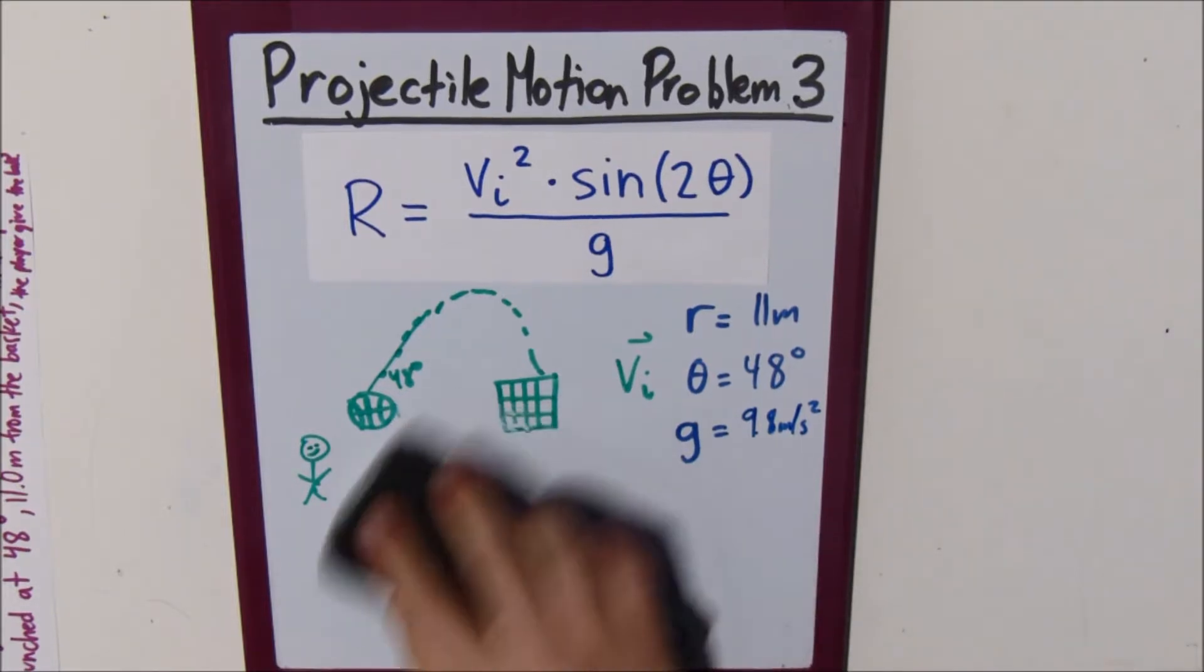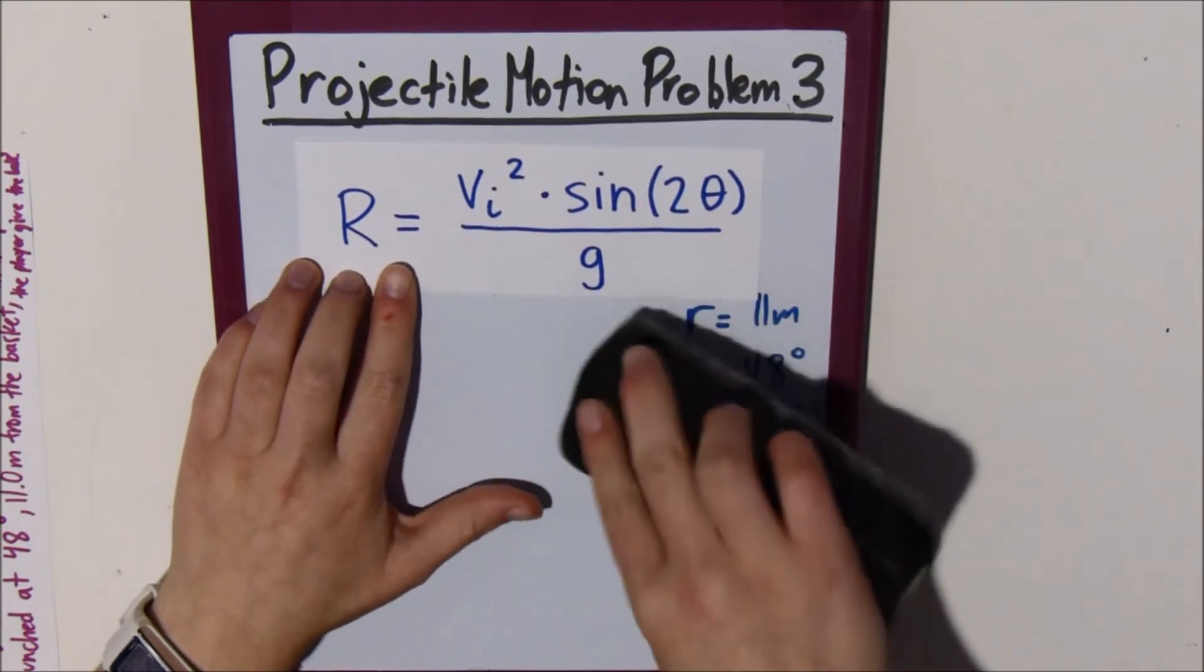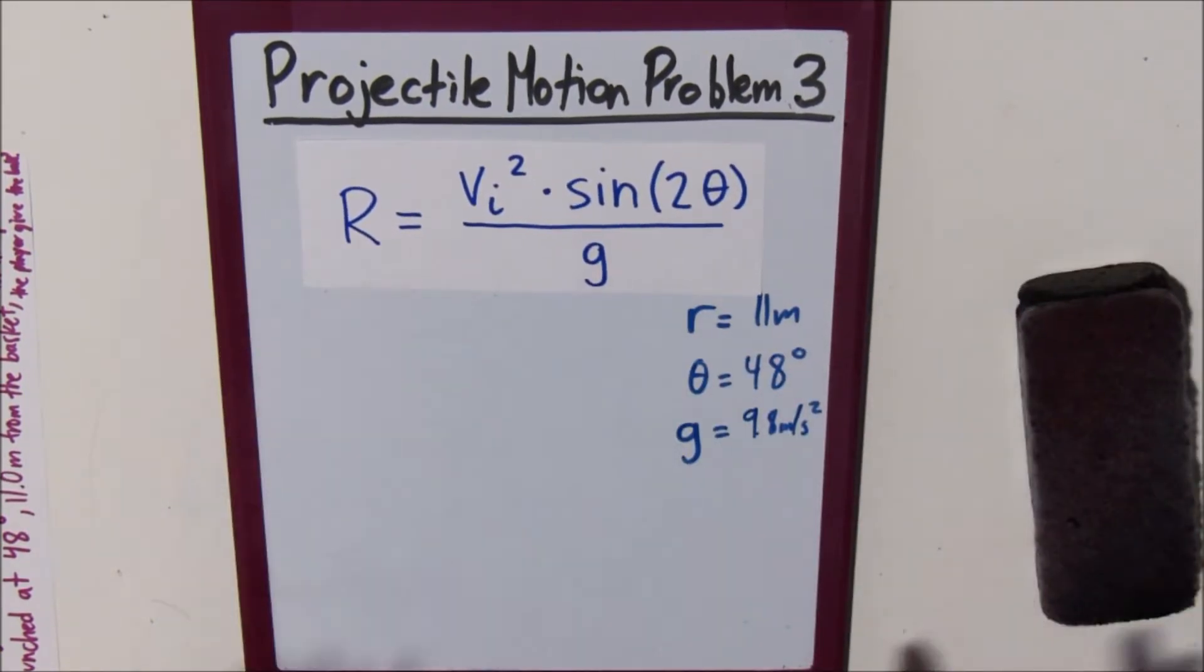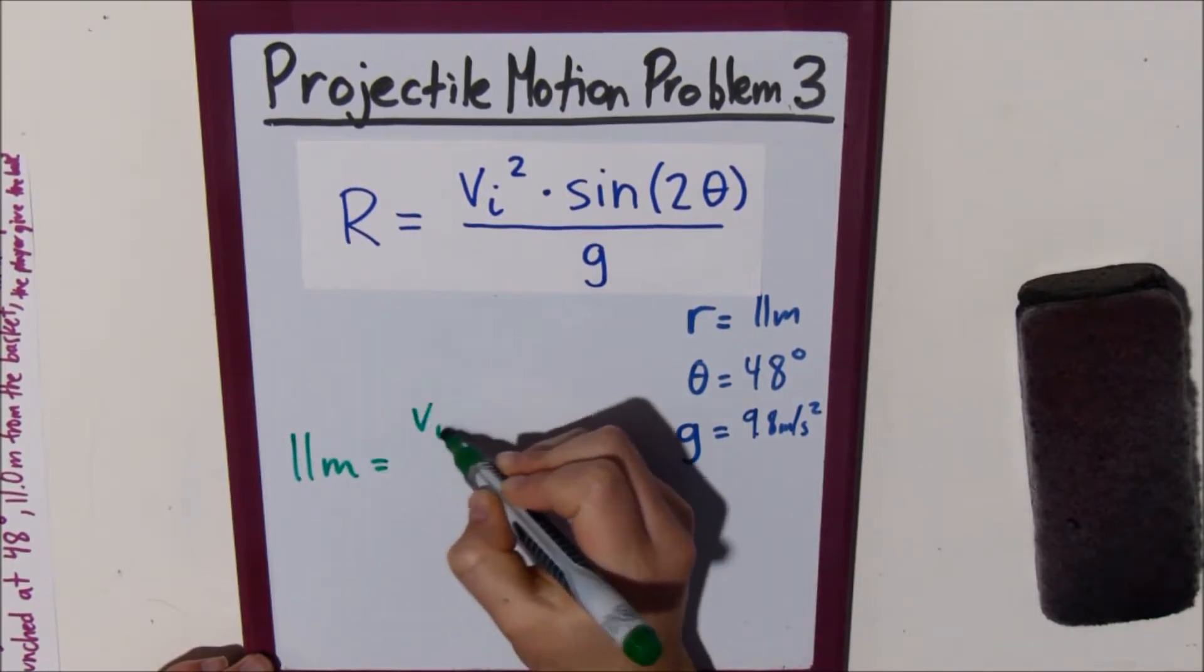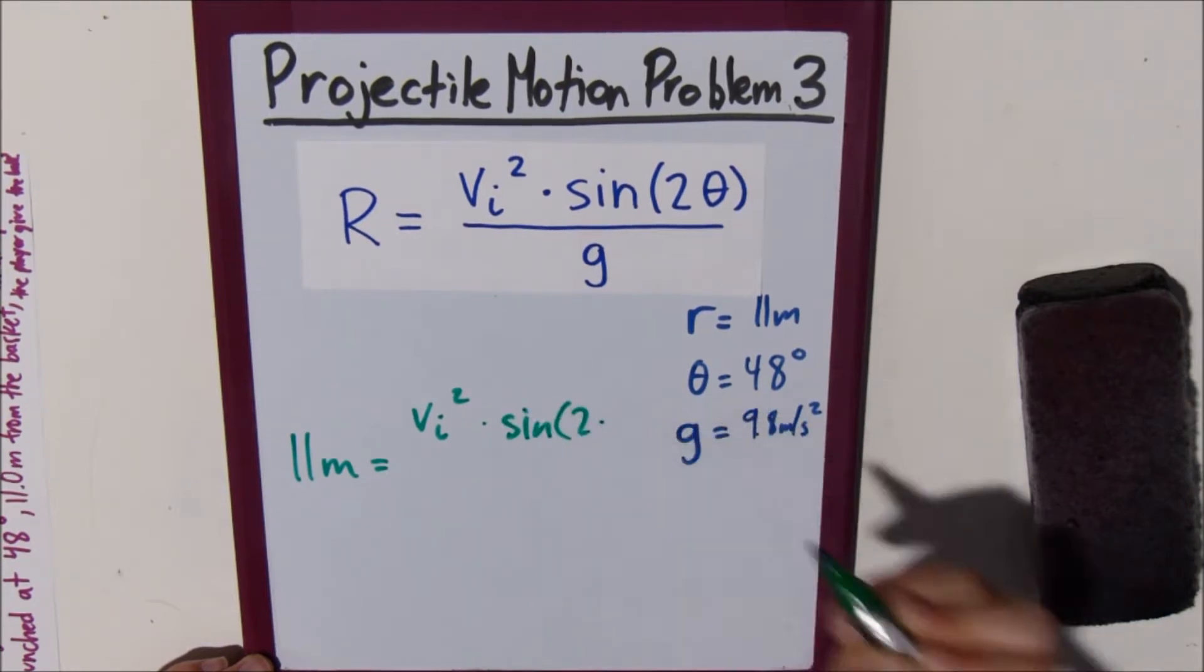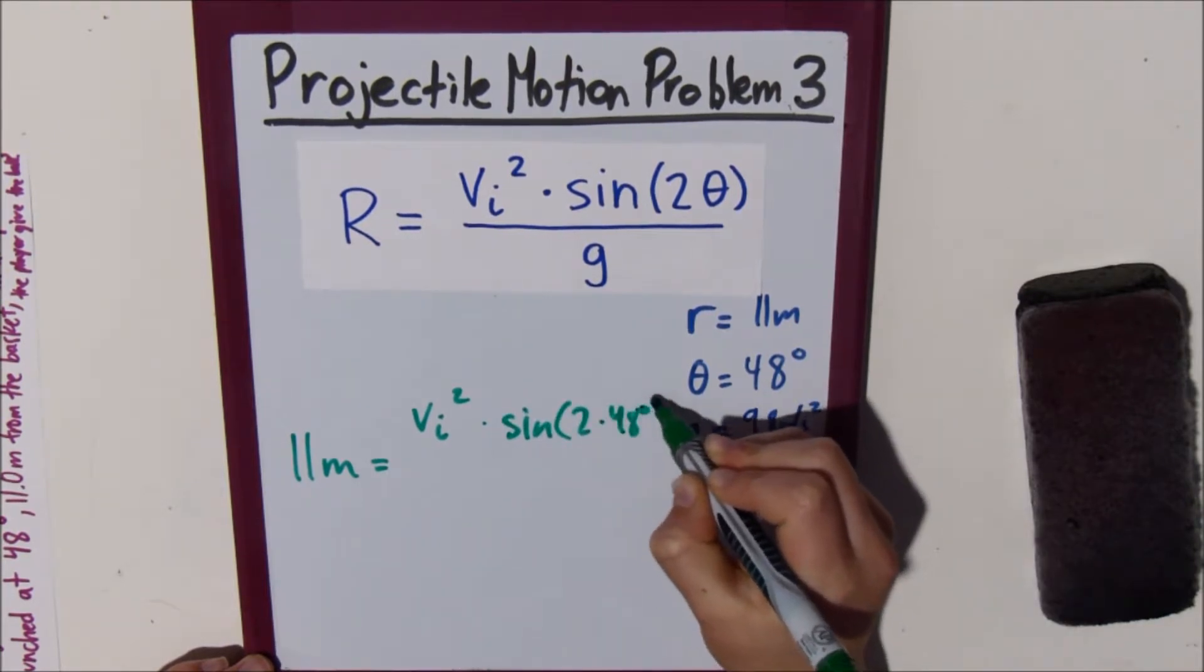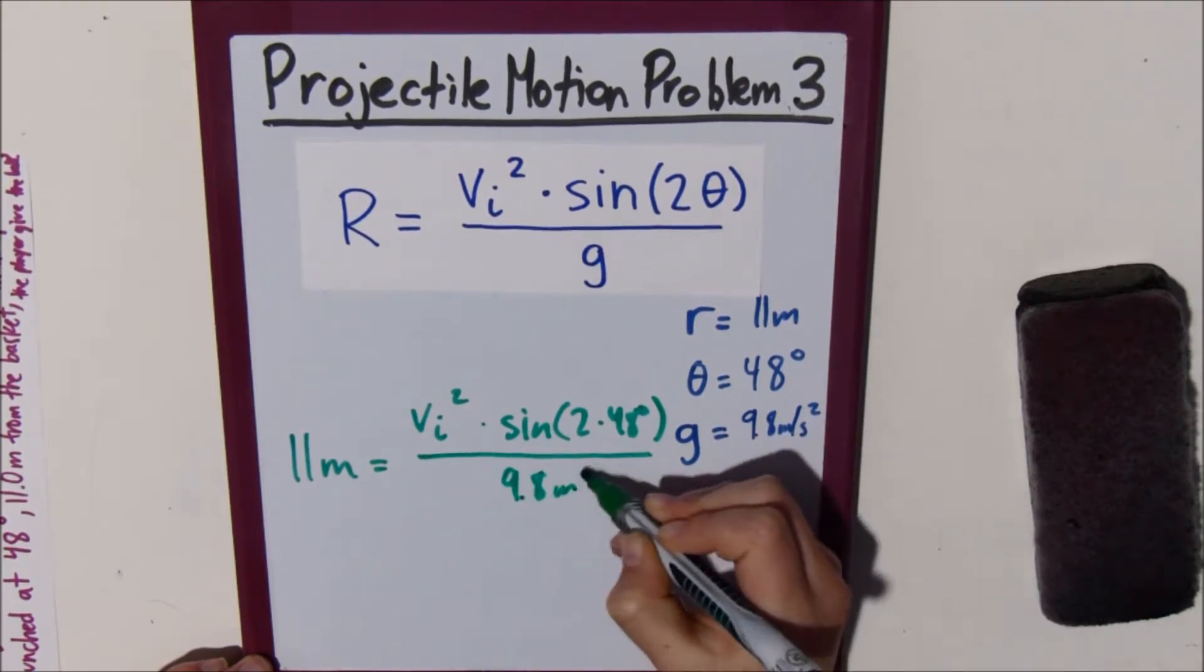So, now, we can solve backwards. Let's plug stuff in. 11 meters equals the initial velocity squared, we don't know that, times sine of 2 times 48 degrees, all over 9.8 meters per second squared.